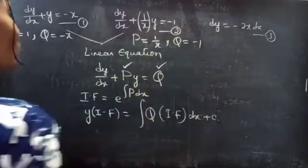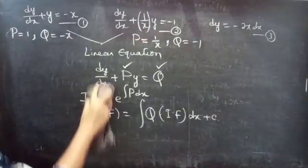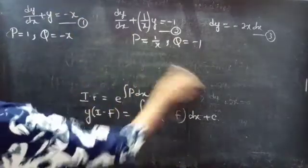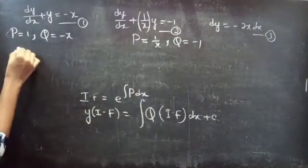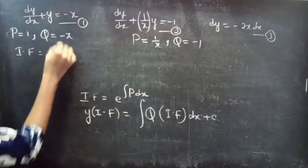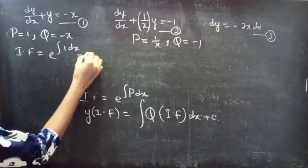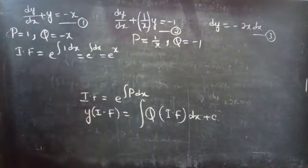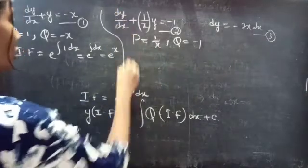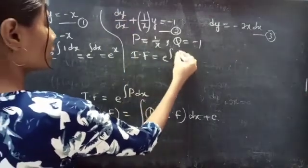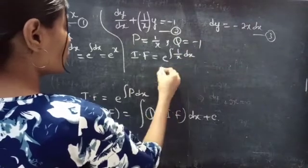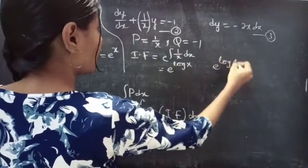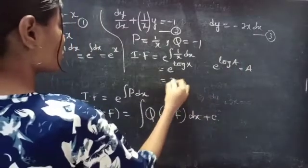Now we find the integrating factor. For equation 1: IF = e^(∫P dx) = e^(∫dx) = e^x. For equation 2: IF = e^(∫(1/x)dx) = e^(log x). Since e^(log A) = A, this equals x.